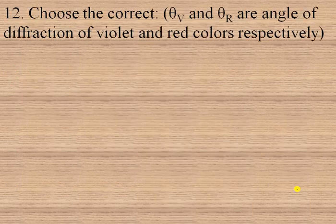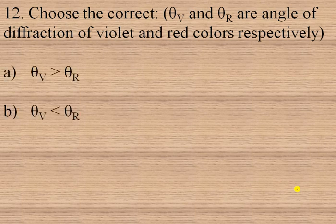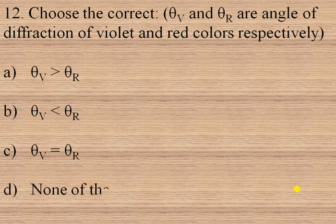The next question — choose the correct: theta V is greater than theta R, theta V is less than theta R, theta V equals theta R, or none of these, where theta V and theta R are the angles of diffraction of violet and red colors respectively. We know (E + D)sinθ = nλ means theta is directly proportional to lambda, and for red light lambda is greater. So theta R will be greater, meaning theta V is less than theta R. Option B is the right option.